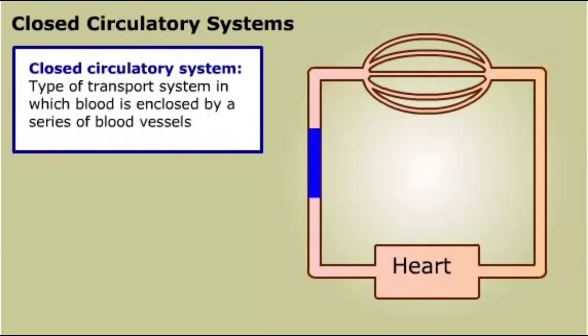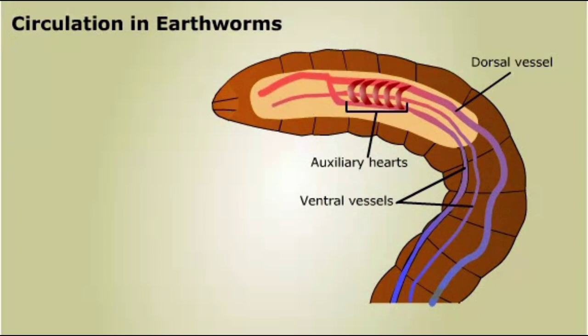In closed systems, blood is pumped very close to the cells, but the cells are not directly bathed in the blood. Instead, the cells are surrounded by interstitial fluid. Worms, sea urchins, and vertebrates all have closed circulatory systems.